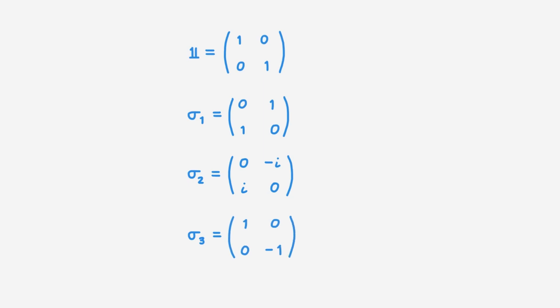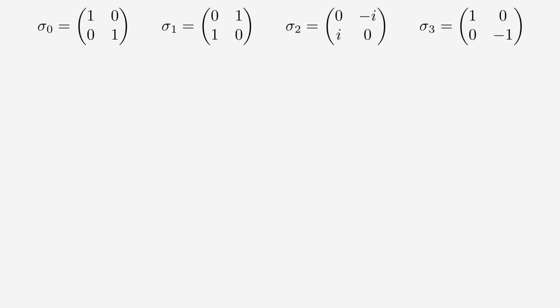In today's video we will use these four matrices as a basis to represent general 2x2 matrices. When we do that, the identity matrix is typically called the 0th Pauli matrix and we can label it with sigma 0. Moving forward I will assume that you're comfortable with the properties of the Pauli matrices, and you can find all the details in the video linked below. Now consider a general complex 2x2 matrix A with matrix elements A11, A12, A21, and A22.